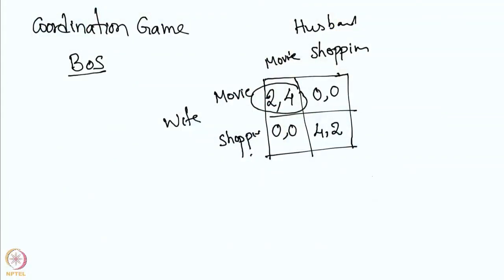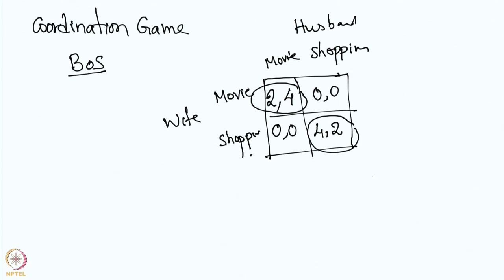Both going to the movie is an equilibrium, and both going to shopping is also an equilibrium. As I have been pointing out, the most important thing in game theory is that the players are making their decisions simultaneously. They do not know what the other is going to do. If both of them knew, it would become an optimization problem and the game flavor would be lost.